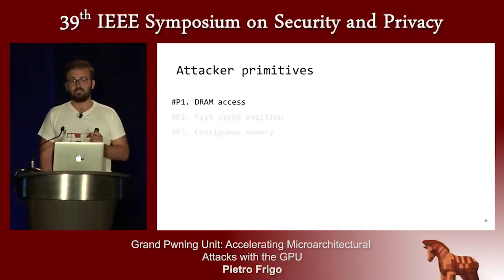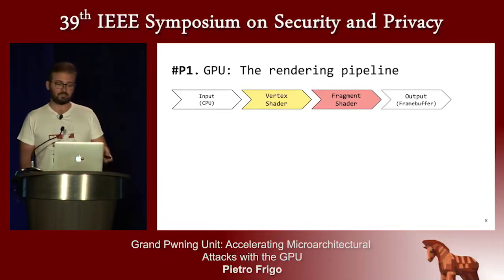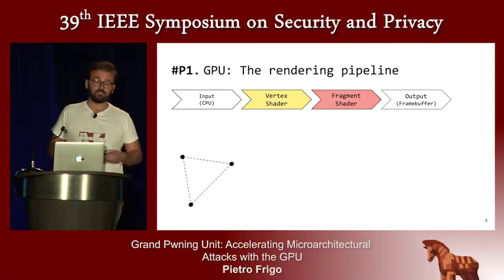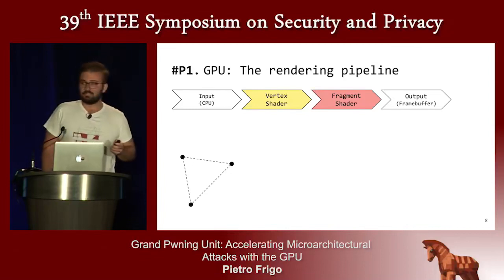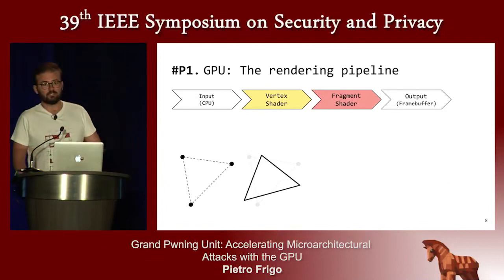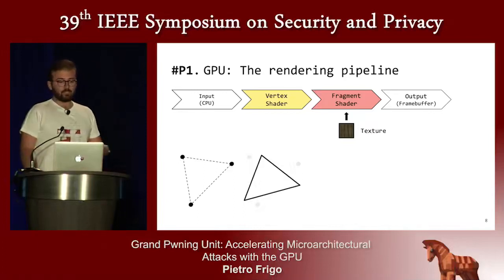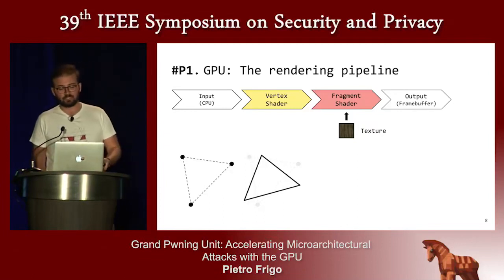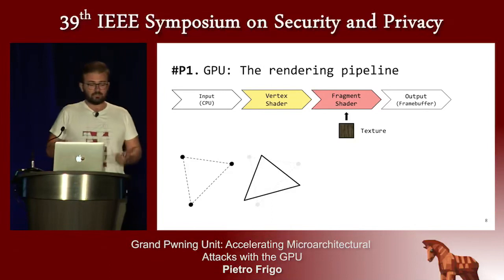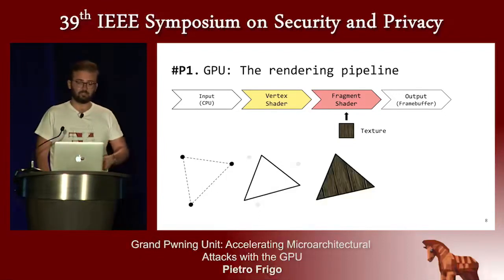To understand how we get DRAM access we need to understand how the GPU works. The GPU aids the rendering pipeline, which runs in four main steps. First, vertices are provided as input. These vertices are run through the vertex shader, which performs geometrical computations. At the end of the vertex shader you have a polygon — a grid of fragments, basically the pixels inside the polygon. Then you run the fragment shader over every single one of these pixels. The fragment shader's purpose is usually to color the pixels, often using textures, for example to draw a wooden chair. So the fragment shader has the ability to access external data in the form of textures, and you get your output — a colored triangle in this case.